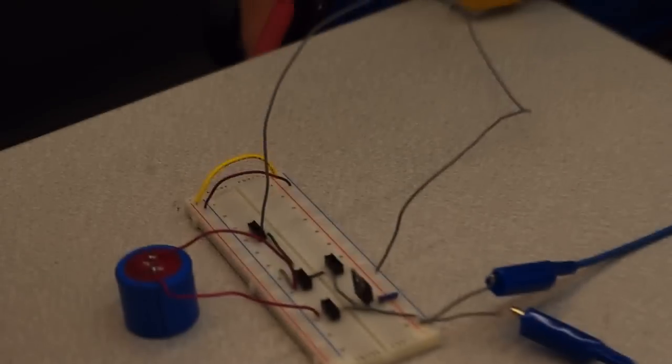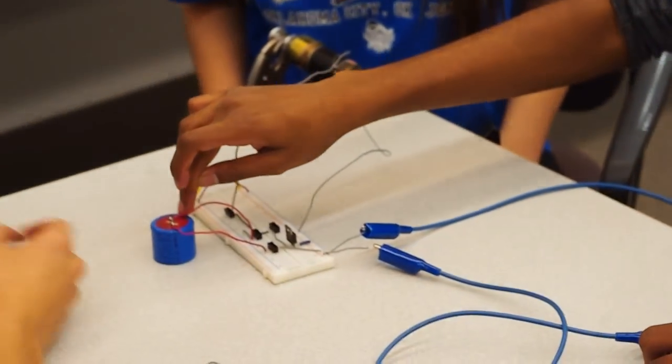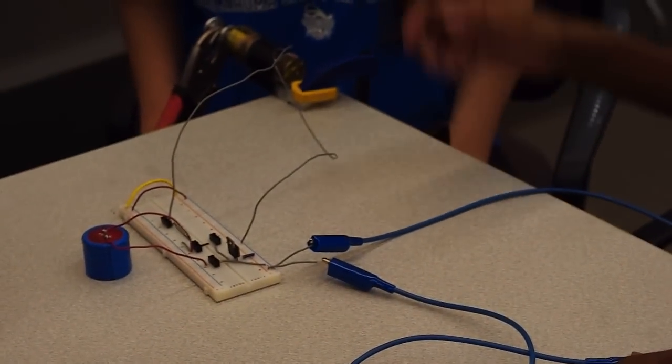The way the circuit works, we have three different ways to power the motor. One way is to control it directly from the battery. Another way is to have it powered directly from the capacitor. And the other way is to actually have the motor charge up the capacitor.